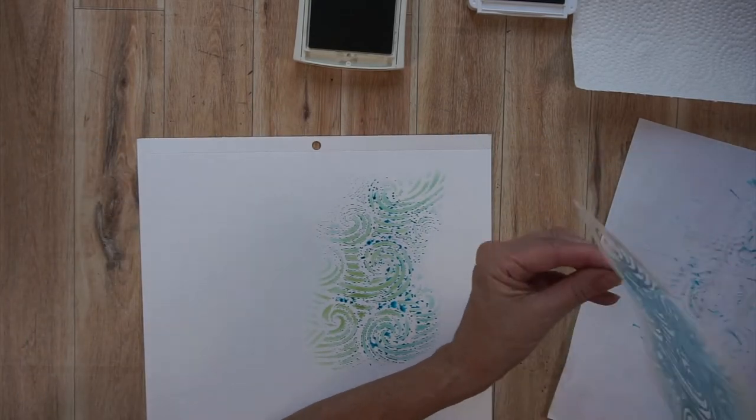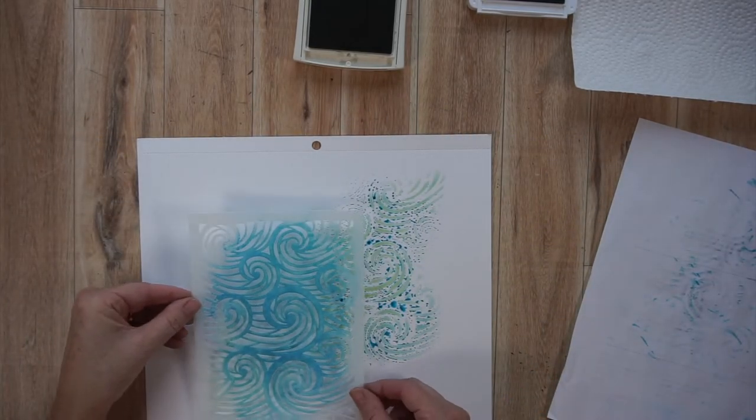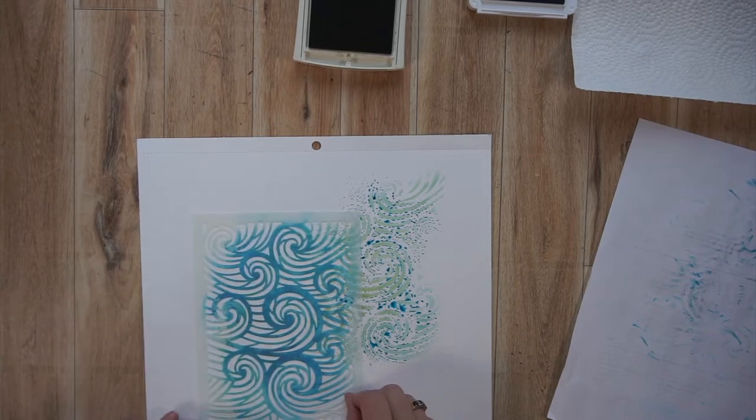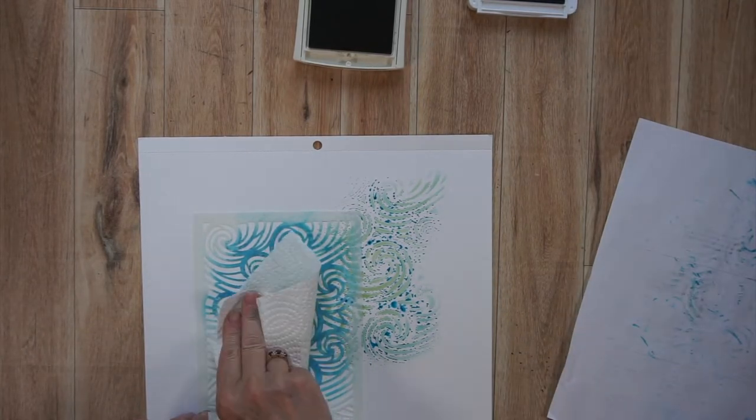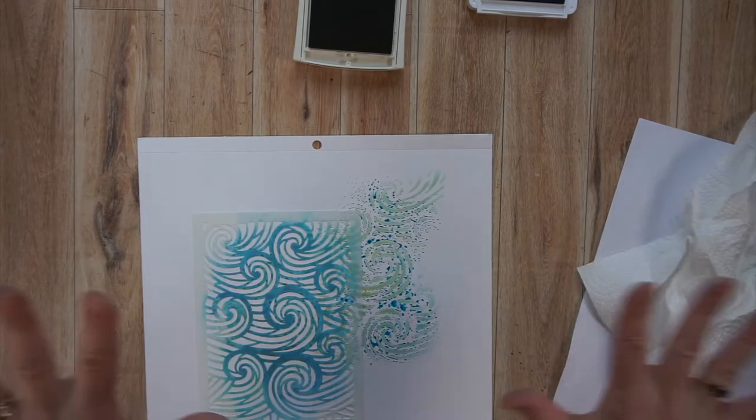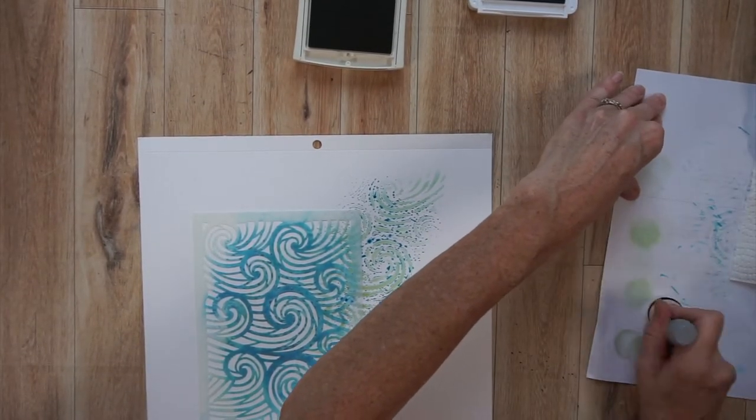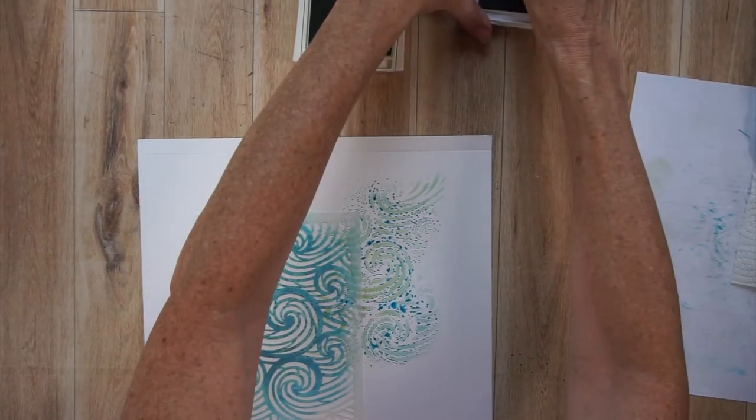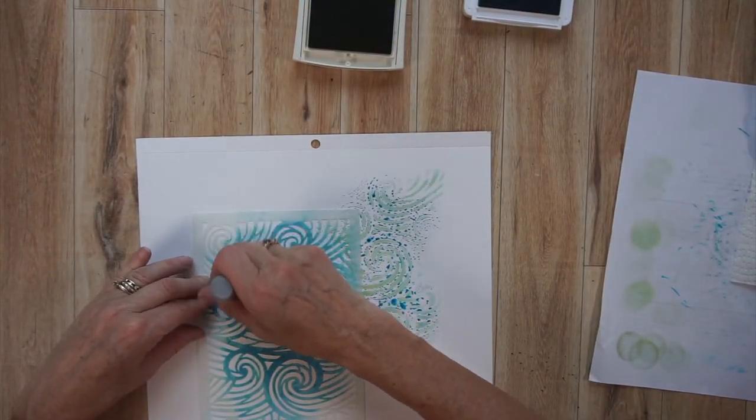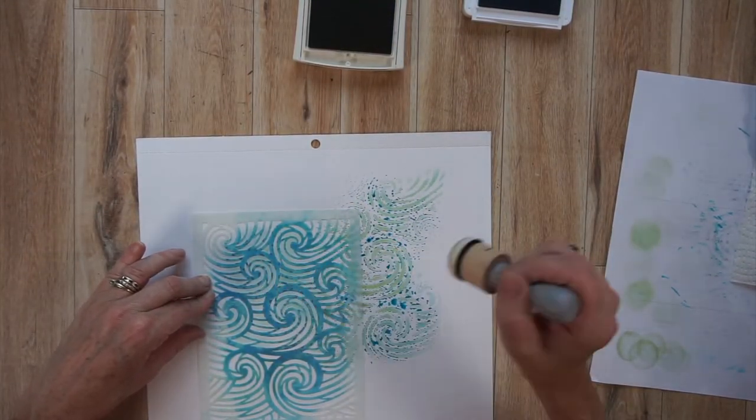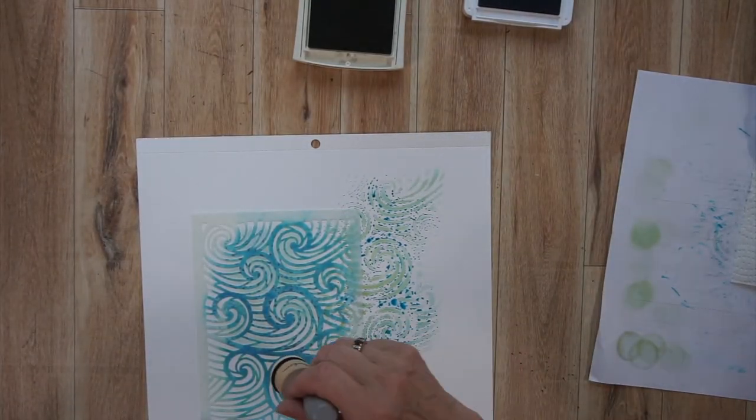So once again you saw there I inked up my stencil. I squirted it with a bit of water. I'm placing it on my page hoping not to move it when it's on there. I just dabbed it with that paper towel and once again I'm coming in with this blending brush and adding a bit of ink starting with the balmy blue then coming in with the green.